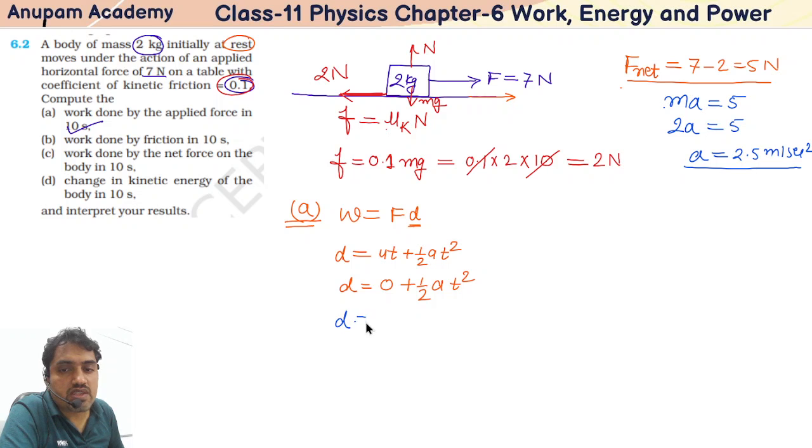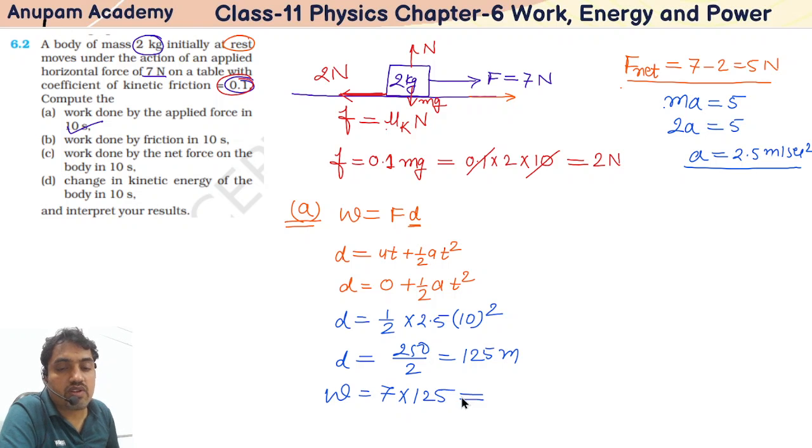So this d equals 1/2 times acceleration 2.5 times time 10 squared. So this d equals 250 divided by 2, ultimately 125 meter. So what is the work done? Force 7 Newton times 125, so the answer is approximately 126... wait.